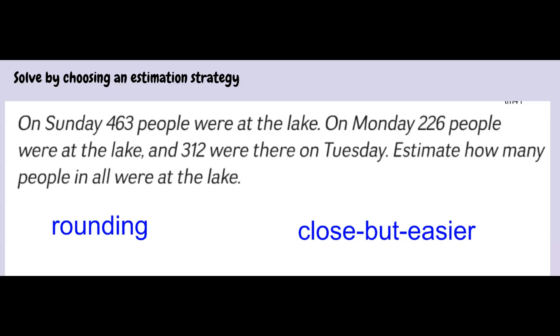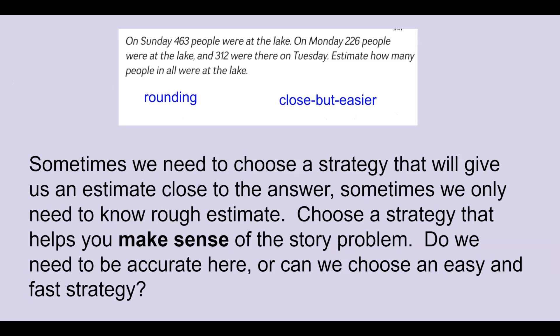Sometimes we need to choose a strategy that will give us an estimate close to the answer. But sometimes we only need to know a rough estimate. You choose a strategy that helps you make sense of the story problem. Do we need to be very accurate here or can we choose an easy and fast strategy and get a rough estimate?